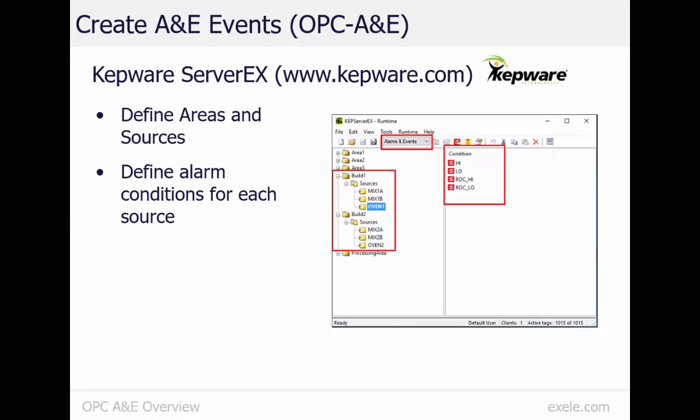To create the alarm events, I'm using the Kepware OPC A&E plugin. This plugin lets me create alarms by configuring conditions for my OPC DA measurement tags. On the left side of the screen, I can create my bakery areas and sources — each building is an area, and each source is a mixer or oven. Each source has an assigned OPC DA tag, and I've assigned my mixing speed and oven temperature tags to each source. On the right side of the screen, I can create alarm conditions for each source. For the oven temperatures, I created high and low level alarms and rate of change alarms. For the mixers, I created high and low level alarms.